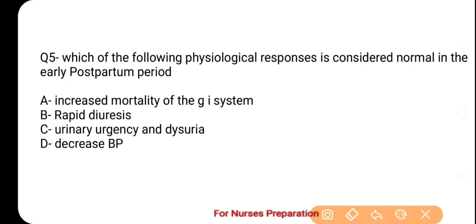Next question is: which of the following physiological responses is considered normal in the early postpartum period? Options हैं — A. Increased motility of the GI system, B. Rapid diuresis, C. Urinary urgency and dysuria, D. Decreased BP. The correct option is B, which is rapid diuresis. Postpartum period के शुरुआती दौर में महिला में rapid diuresis की शिकायत हो जाती है। इसका मुख्य कारण glomerular filtration rate का increase होना होता है। बाकी वाली clinical findings early postpartum period में देखने को नहीं मिलती हैं।